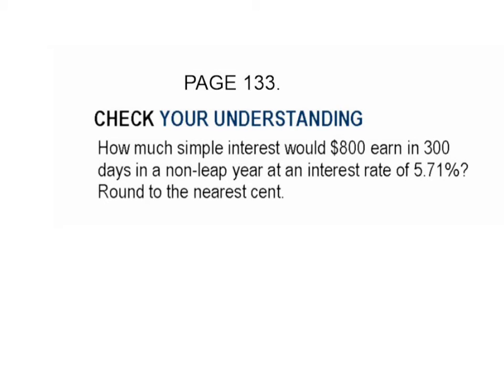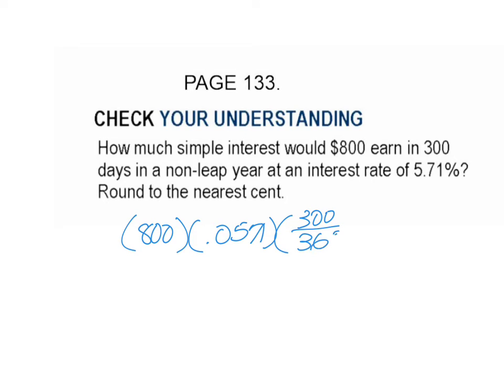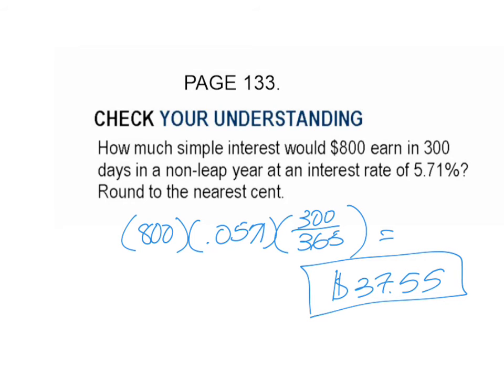All they're trying to get you to do here is think about a year not just as a decimal, but in our first example as a number of months in a year, and here as a number of days in a year. So instead of writing 7 over 12 like we did for our last example, we would write 800 times 0.0571 times 300 out of 365 days. The answer is $37.55. Get that down and when you're ready to go on, hit play.